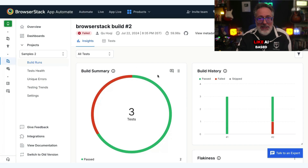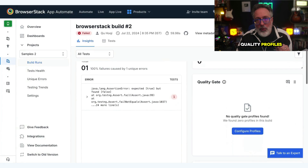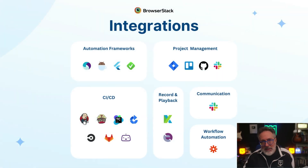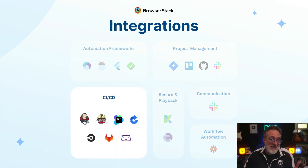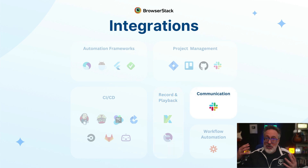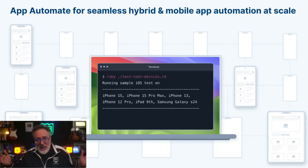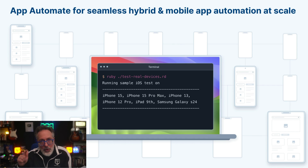BrowserStack's latest builds dashboard now comes equipped with advanced debugging and reporting capabilities like AI-based error categorization, flaky test detection, quality profiles, and a bunch more. App Automate also supports a variety of integrations — automation frameworks, CI/CD, project management tools, recording and playback tools, communication tools, workflow automation tools, app distribution, and many more. With this array of features, App Automate is truly a one-stop solution to scale your mobile app releases with improved quality, providing you with the critical competitive edge you need.